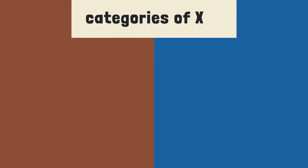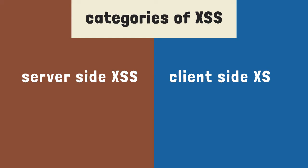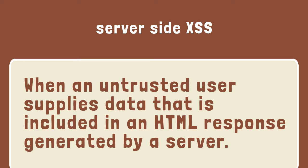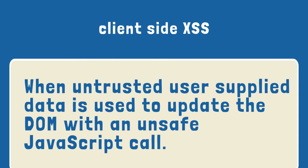There are two categories of XSS based on where the untrusted data is used: server-side XSS and client-side XSS. Server-side XSS occurs when an untrusted user supplies data that is included in an HTML response generated by a server. This data might come from a single request or from a stored location, meaning it could be either persistent or non-persistent — both fall under the category of server-side XSS. Client-side XSS comes from untrusted user-supplied data. When this untrusted data is used to update the DOM with an unsafe JavaScript call, the DOM allows objects on the web page to be manipulated.